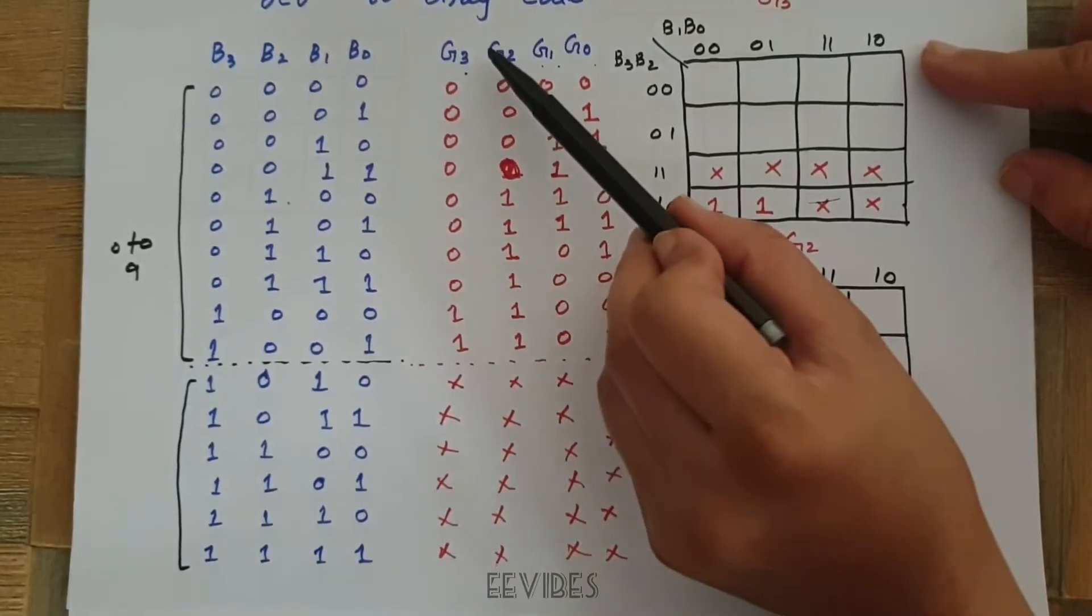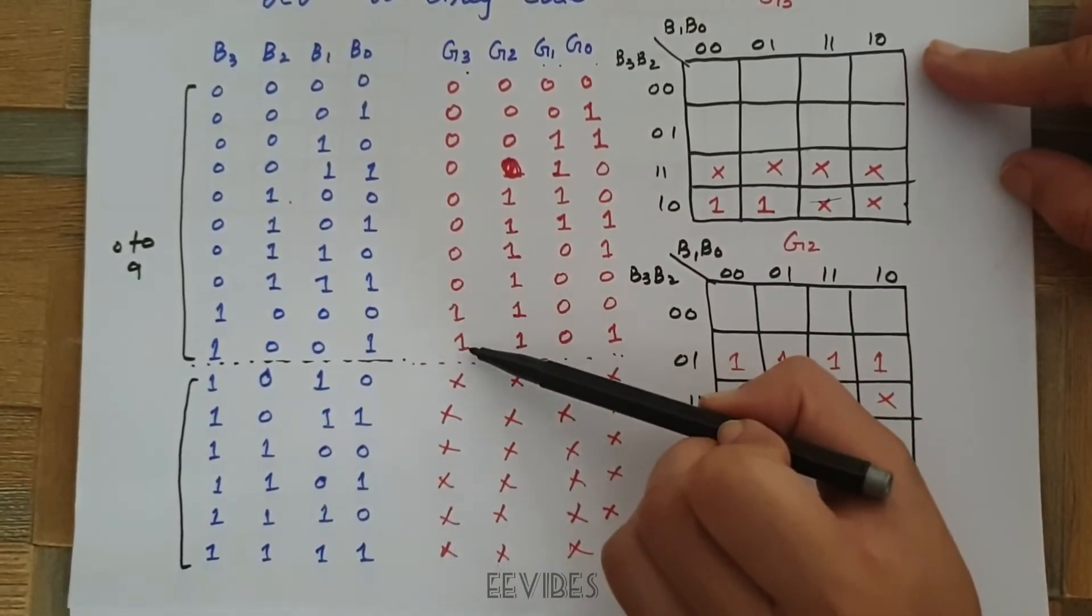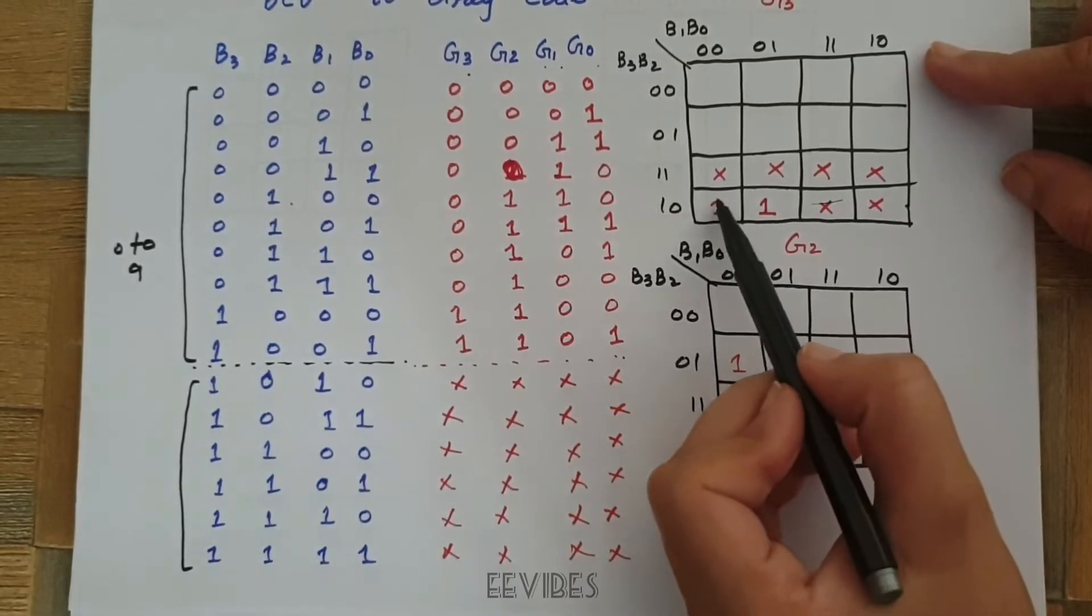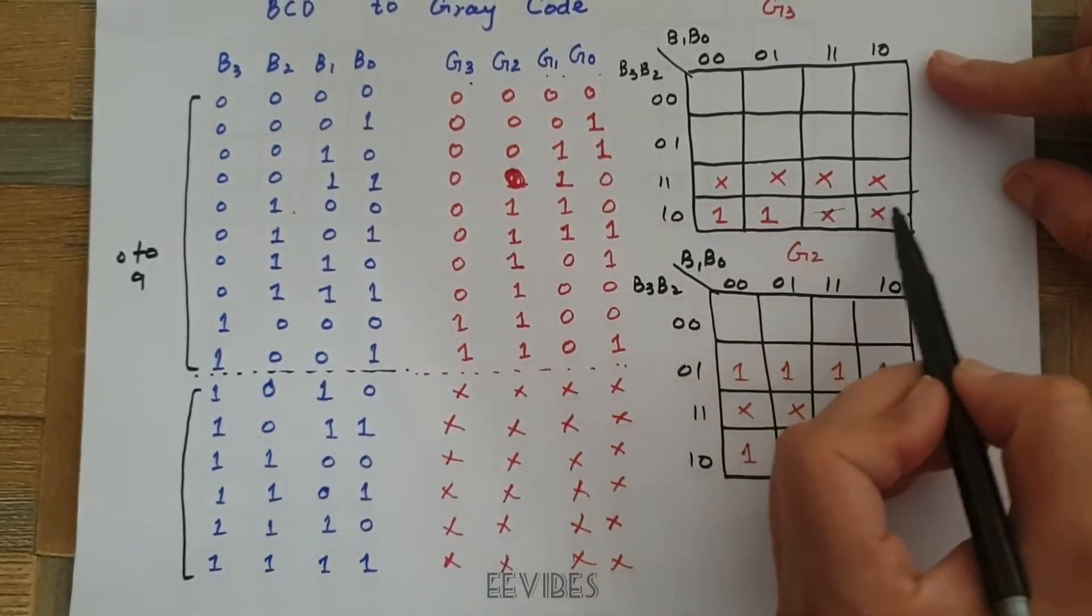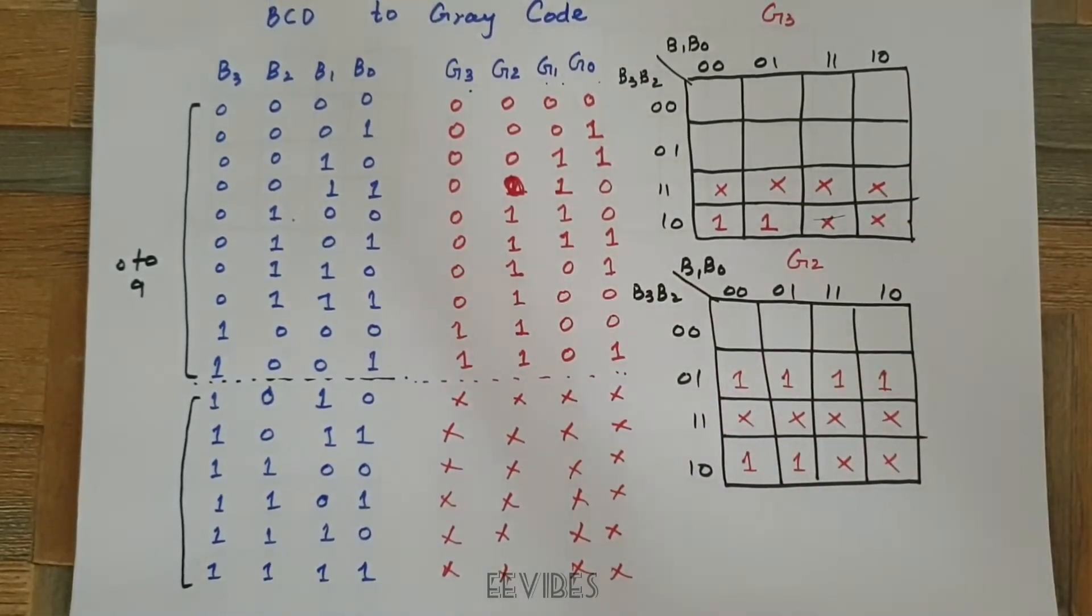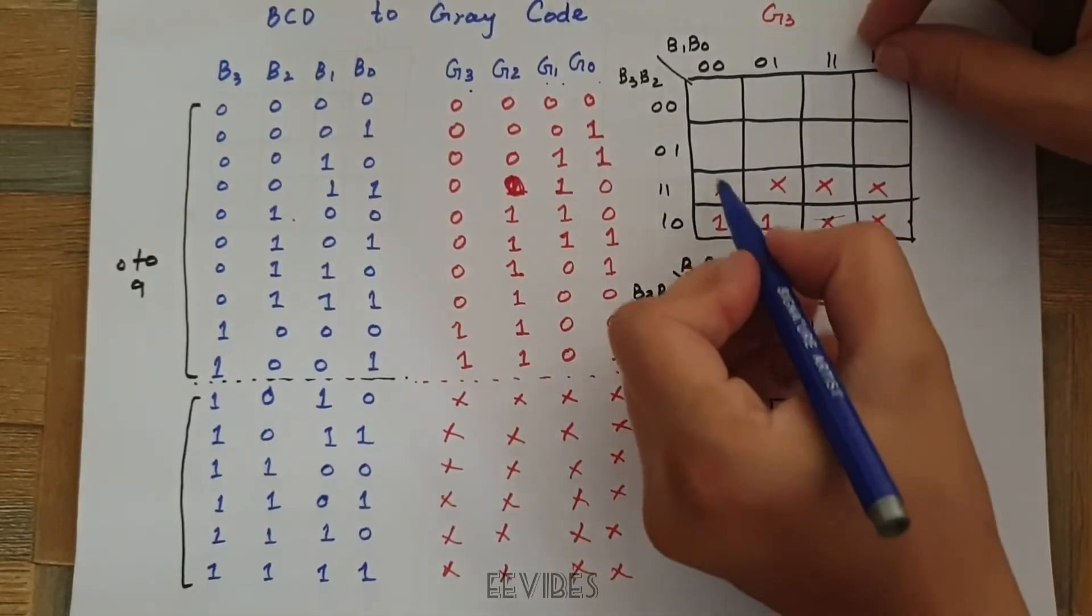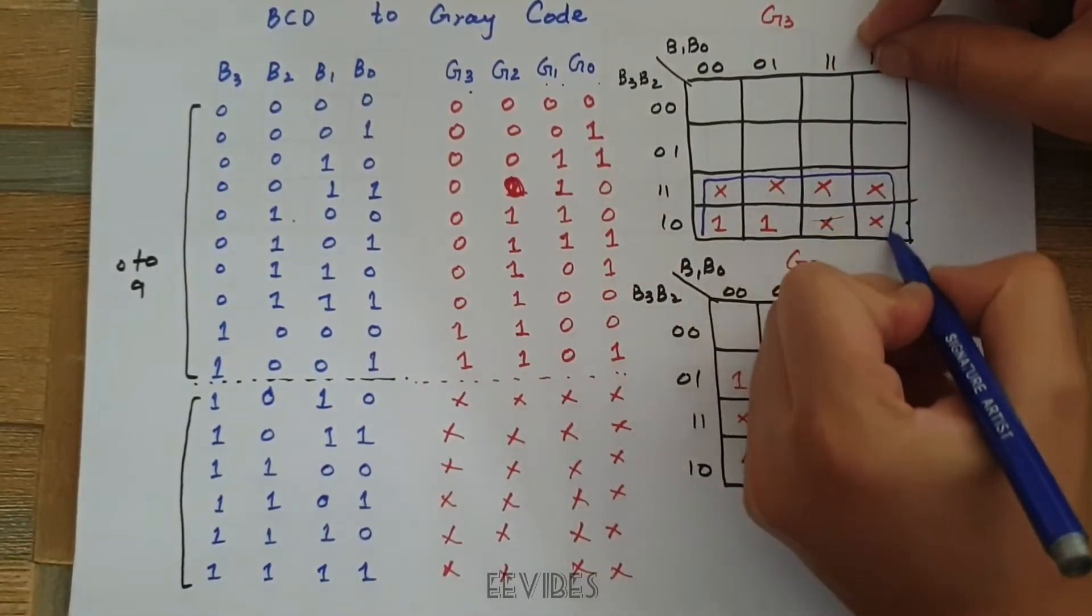Once you have actually written the K-map, you can see for the G3, the only min terms that are present are 8th and 9th. That's why I have placed 1 over here and for the rest of the boxes, I have placed the don't care conditions.